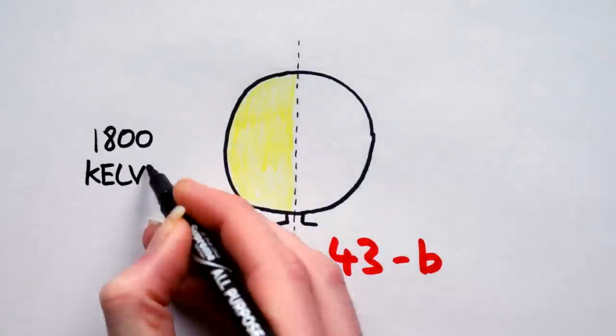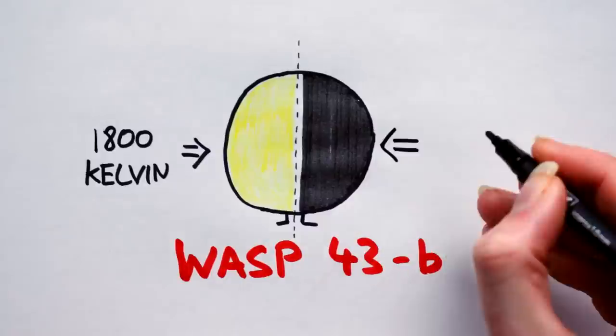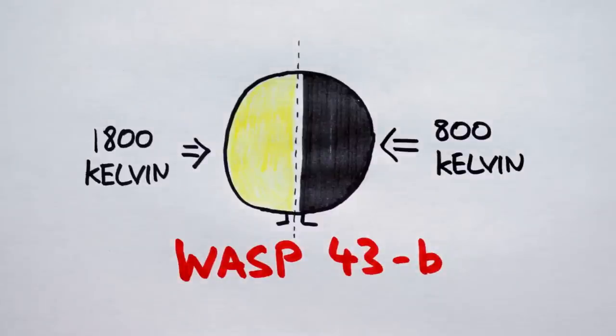WASP-43b has a 1800 degree Kelvin day side and a somewhat chilly 800 degree Kelvin night side.